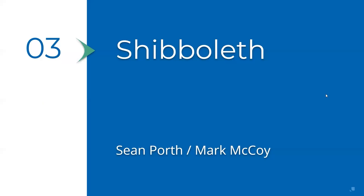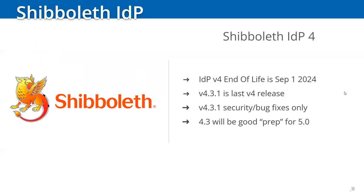Shibboleth will be presented by Sean Quirk and Mark McCoy. The biggest thing to be aware of is that IDP version 4 has an official end-of-life date of September 1st next year — sooner than the usual couple of years. If you're not there yet, you really should be. Version 4.3.1 is the last version 4 release, containing primarily security and bug fixes. Getting to 4.3 first is required prep for version 5.0 due to the upgrade requirements.